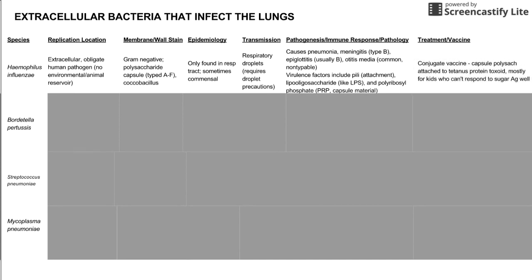The vaccine for Haemophilus is a conjugate vaccine. The polysaccharide capsule is attached to a tetanus protein toxoid, and this allows children who don't have a good immune response to polysaccharides to make antibodies against the polysaccharides by connecting it to a protein toxoid. It's worth understanding how a conjugate vaccine works — when you connect a polysaccharide to a protein, the body ends up making an antibody against that polysaccharide.